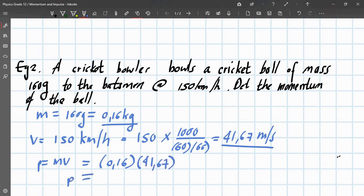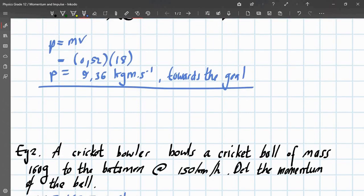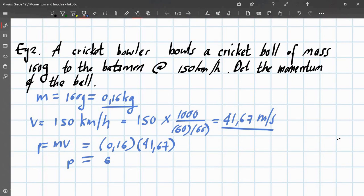And your final answer would be 6.67 kilograms meters per second. And direction towards the batsman.